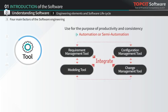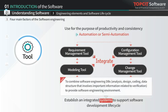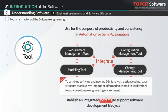A tool is used for the purpose of production or consistency, and is an automated or semi-automated method. In the software development life cycle, numerous tools such as requirement management tools, modeling tools, and configuration management tools exist. When these tools integrate to share information, they form a system that supports software development — a combination of software engineering databases providing a software engineering environment.